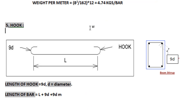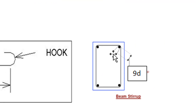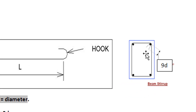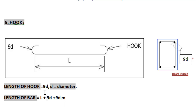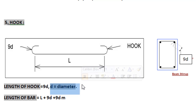Now we will look at bar shapes. The first shape is the hook. Hooks are used mostly in stirrups for beams or columns. The hook angle is normally 90 degrees, though some take 60 or 70 — it depends. If the bar length is L, the total length will be L + 9d + 9d, where d is the diameter.